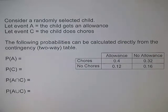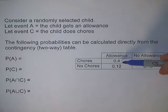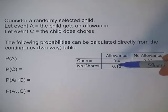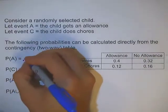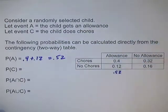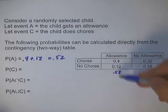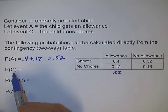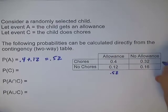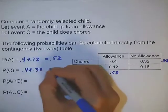The following probabilities can be calculated directly from the contingency table. The probability of A — the probability that a student gets an allowance — covers allowance-and-chores plus allowance-and-no-chores, so it's 0.4 plus 0.12, which equals 0.52. The probability of C — doing chores — is chores-and-allowance plus chores-and-no-allowance: 0.4 plus 0.32, which equals 0.72.